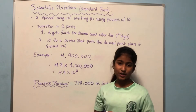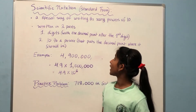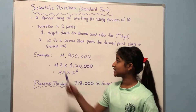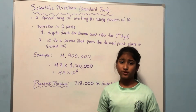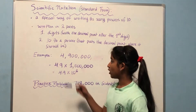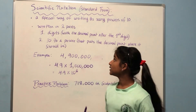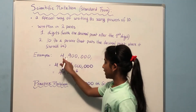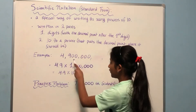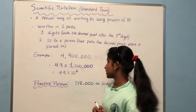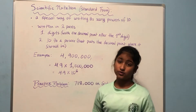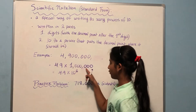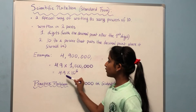Now let's learn about scientific notation, also known as standard form. Scientific notation is a special way of writing numbers using powers of ten. It's written in two parts: the first part consists of digits with the decimal point after the first digit, and the second part consists of a power of ten that puts the decimal point where it should be. For example, four million nine hundred thousand in scientific notation: the decimal goes after the first digit giving us 4.9, and one million has six zeros, so the answer is 4.9 times ten to the power of six.